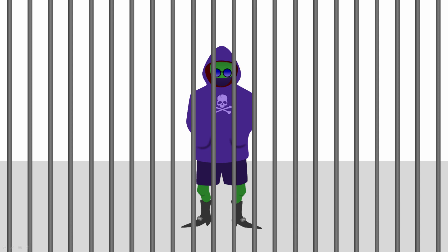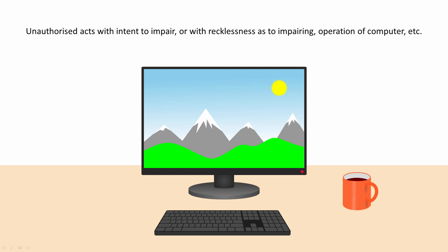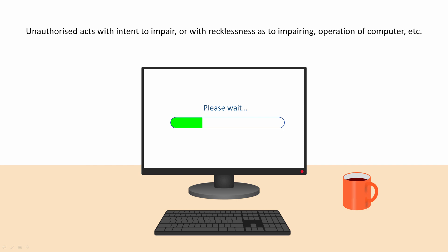The wording of the third section of the Computer Misuse Act might seem vague, even a little clumsy: unauthorised acts with intent to impair, or with recklessness as to impairing, operation of computer, etc. But this is by design. The wording is open to a range of interpretations by a court of law, and therefore covers a multitude of sins. A person is guilty under this section if their intention is to prevent someone else's computer from working properly without their permission — making it difficult or even impossible for them to run a programme or to access their data, even if the impaired access is only temporary.